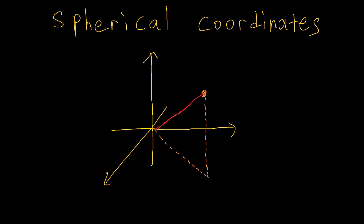To describe a point, we are going to use three parameters. This time, those parameters are going to be rho, theta, and phi.